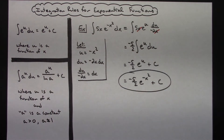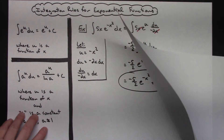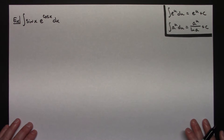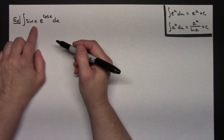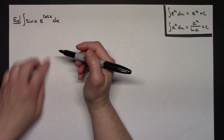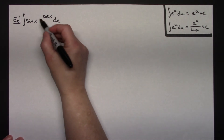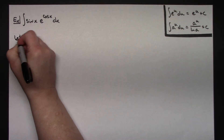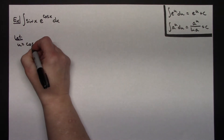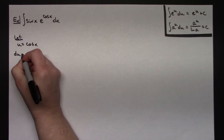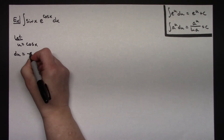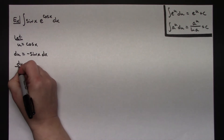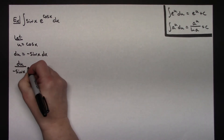Relatively short and straightforward for that first example. For my second example, let's do one with a trig function. We're going to integrate sine x times e to the cosine x dx. Again, my recommendation is to let your u be whatever that exponent is — so let u equal cosine x. Then du will be equal to negative sine x dx, and when I solve for dx I get du over negative sine x equaling dx.